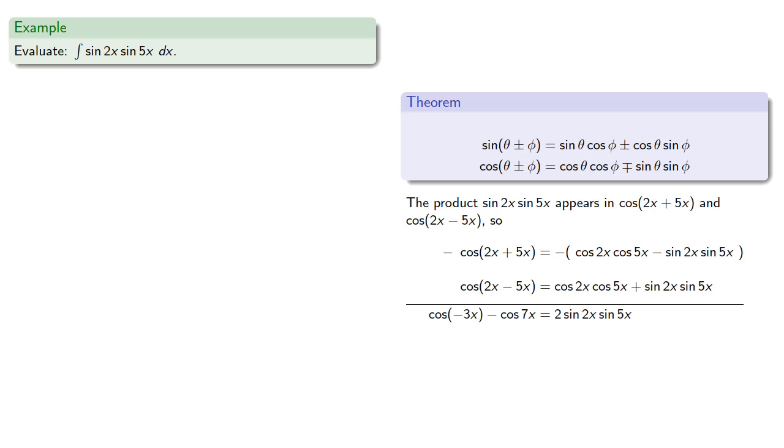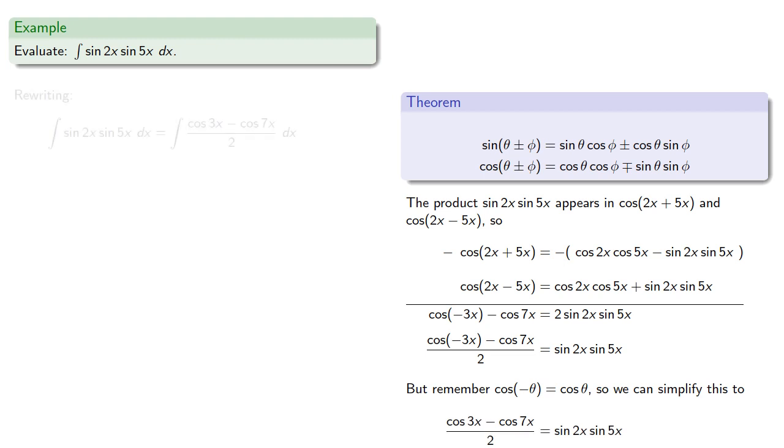Solving for sin 2x sin 5x. And remember, cosine is an even function. So cosine of negative theta is cosine of theta. So we can simplify our expression too. And so our integrand becomes, and we can now do the calculus.